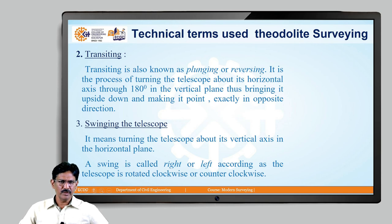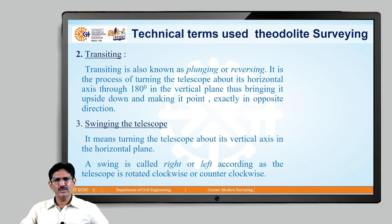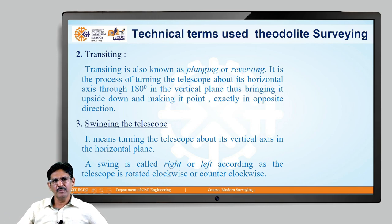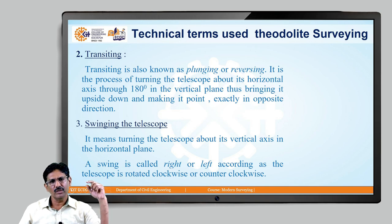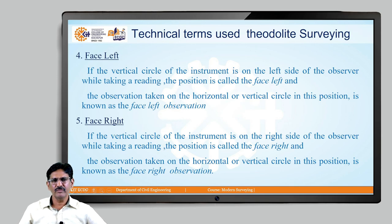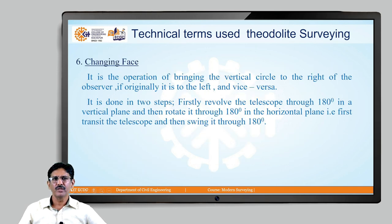Transiting is the process of plunging or reversing the telescope — rotating it 180 degrees in the vertical plane so it points in exactly the opposite direction. When the eyepiece is at the objective end and you rotate the telescope, the objective comes toward your eye, so you then swing the telescope 180 degrees in the horizontal plane. Transiting is in the vertical plane and swinging is in the horizontal plane. When you do both transiting and swinging, the telescope changes from face left to face right. This is an important process when you want to change the direction of the telescope.